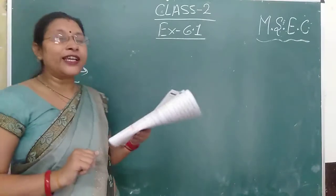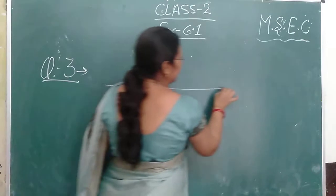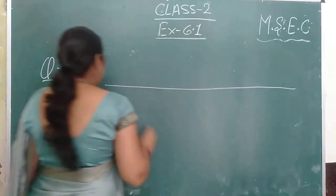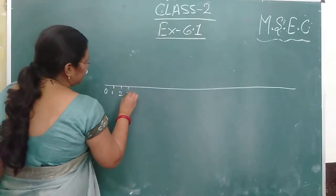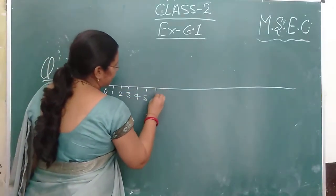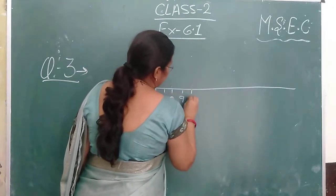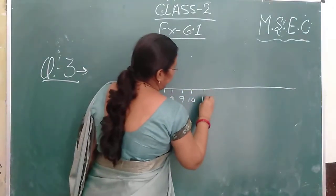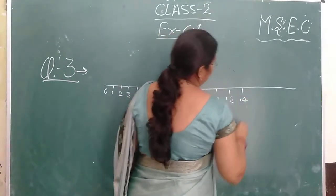So how do you divide the number line? 1, 2, 3, 4, 5, 6, 7, 8, 9, 10, 11, 12, 13, 14. Okay.